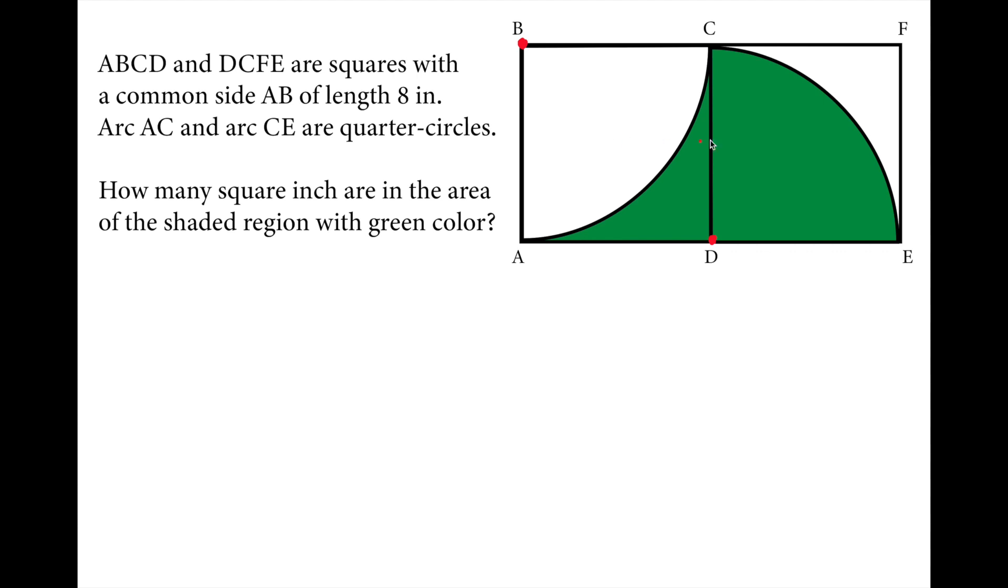The green colored quarter circle and the white colored one. Basically we need to include the area of this circle and exclude the area of this circle from this square and find the leftover section inside the square.